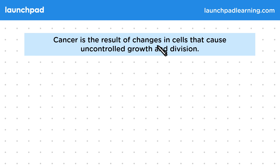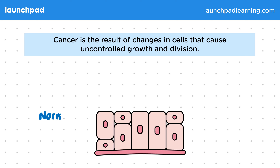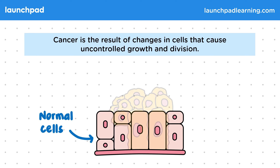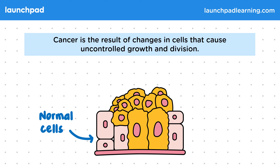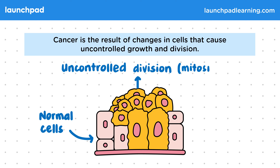Cancer is the result of changes in cells that cause uncontrolled growth and division. In this diagram you can see normal cells. Sometimes cell differentiation or division goes wrong and some genes are affected. This uncontrolled division happens by mitosis.